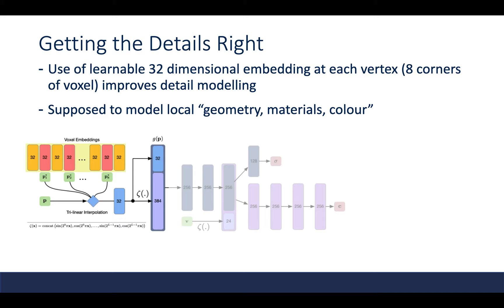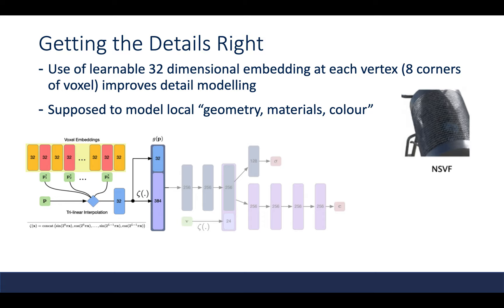Now we have a way to do fast and precise sampling using sparse voxels. But there's another advantage: the authors noted that you can place learnable embeddings in the corners of each voxel, and this will help detail modeling a lot. To get an input to our continuous representation MLP, we simply spatially interpolate these embeddings as input, and this provides additional local information about the geometry, materials, and color within each voxel. As you can see, the embeddings do help the detail modeling quite a bit.